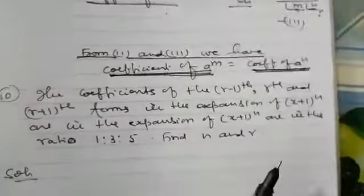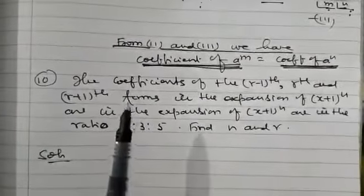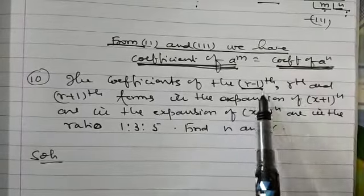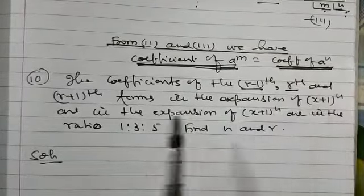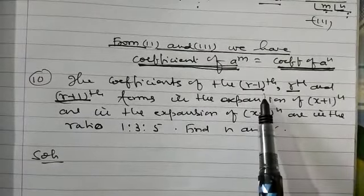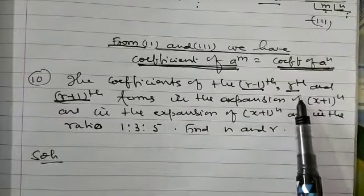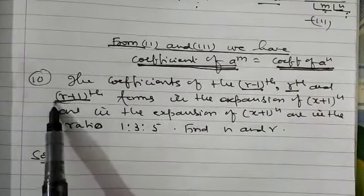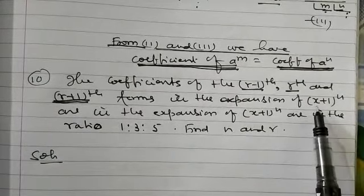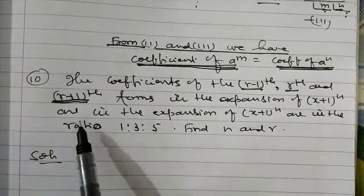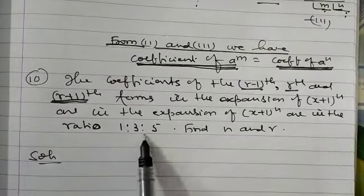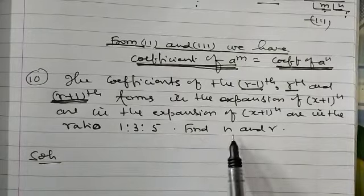Now problem number 10. The coefficients of the (r−1)th term, rth term, and (r+1)th term in the expansion of (x + 1) to the power n are in the ratio 1 : 3 : 5. Find n and r.